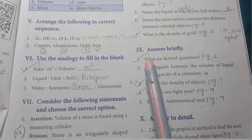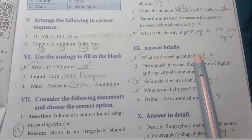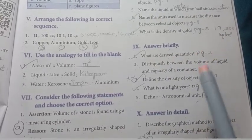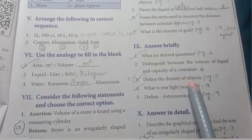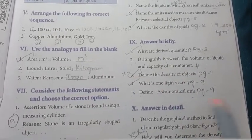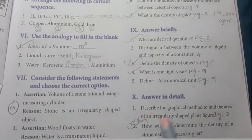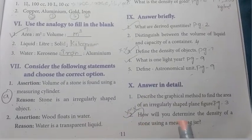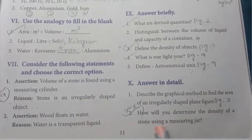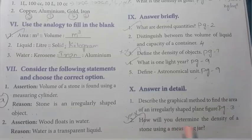Answer briefly. First one, what are derived quantities? Then, define the density of objects. Repeated in two question papers, in the question case. Detail is important. How will you determine the density of a stone using a measuring jar? Detail question.